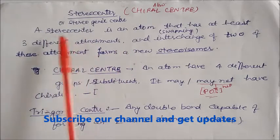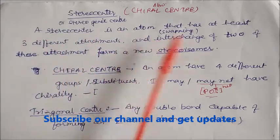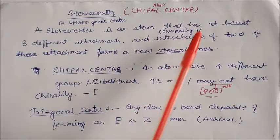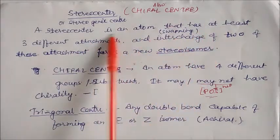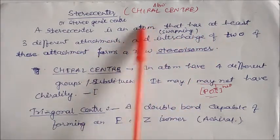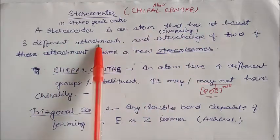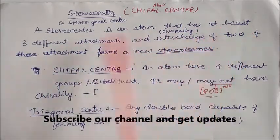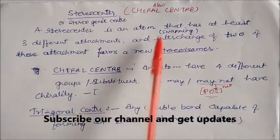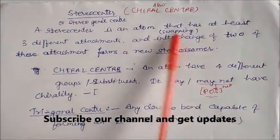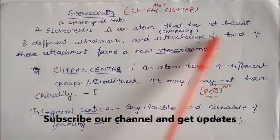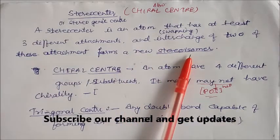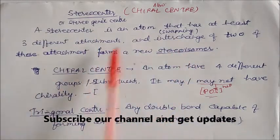What is actually a stereocenter? A stereocenter is an atom that has at least three different attachments. So we are mentioning atoms which have three different attachments, and when you are interchanging or swapping any two of these attachments, you will get a new stereoisomer. This is a stereogenic center.